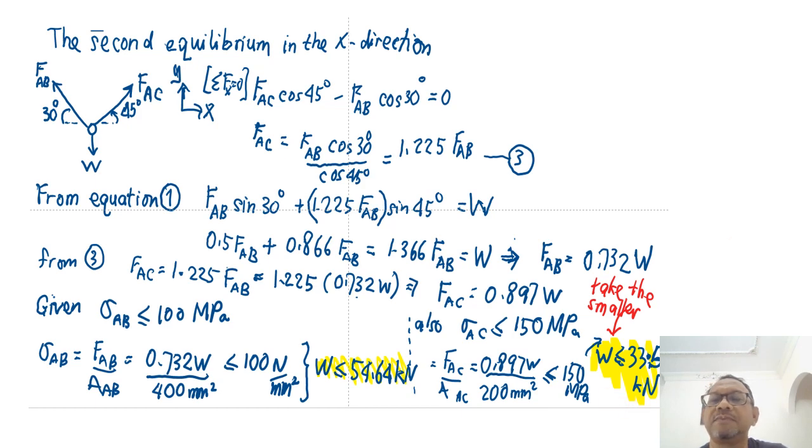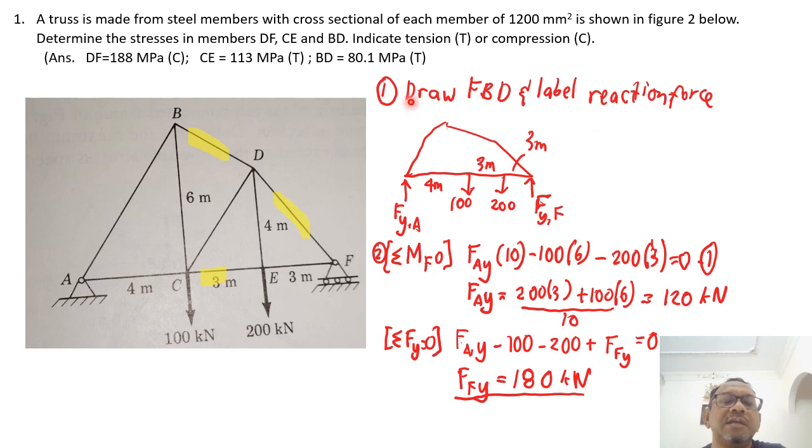So that is the maximum W that can be put here that will obey both equations, both conditions, sigma AB and sigma AC. Okay, so this is the first question and you know how you use the equation of motion. And just the insertion of the strength criteria allows you to find the W value that can fulfill the maximum strength of each wire. All right, let's move on to the second one. So we'll take the smaller one. So now, it's the second question. So in this second question, a truss is made from steel members with cross-sectional of each member of 1200 mm square.